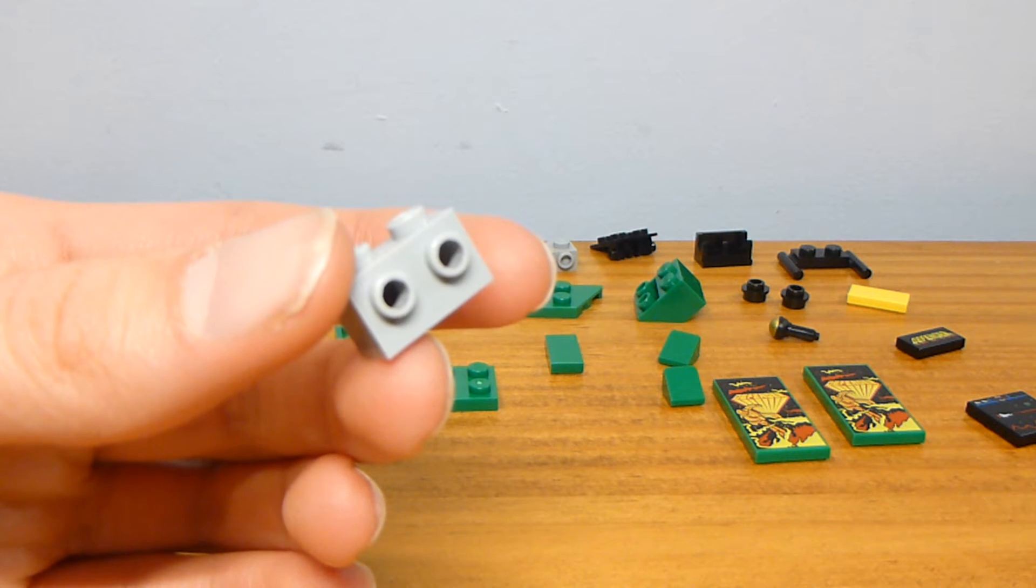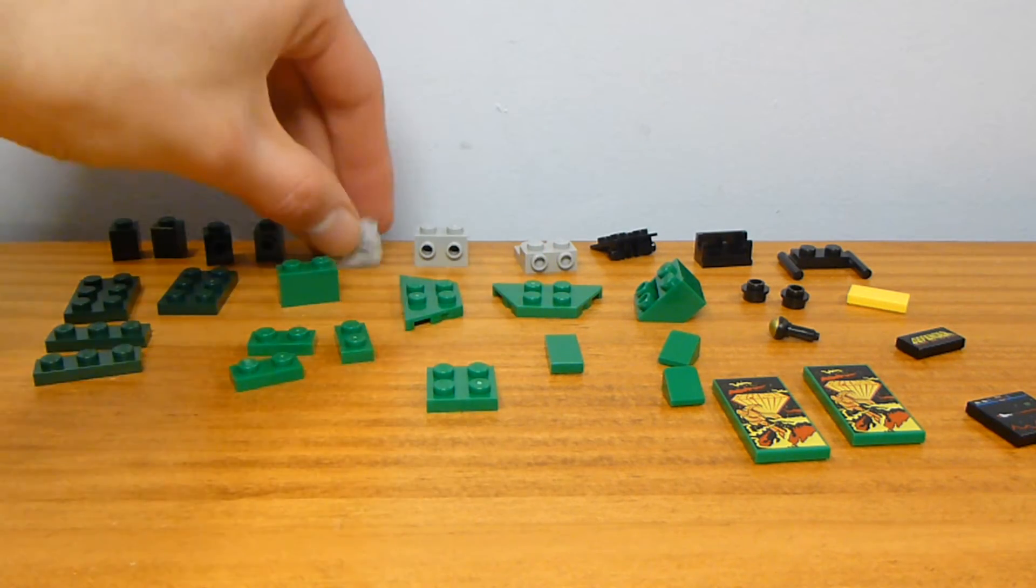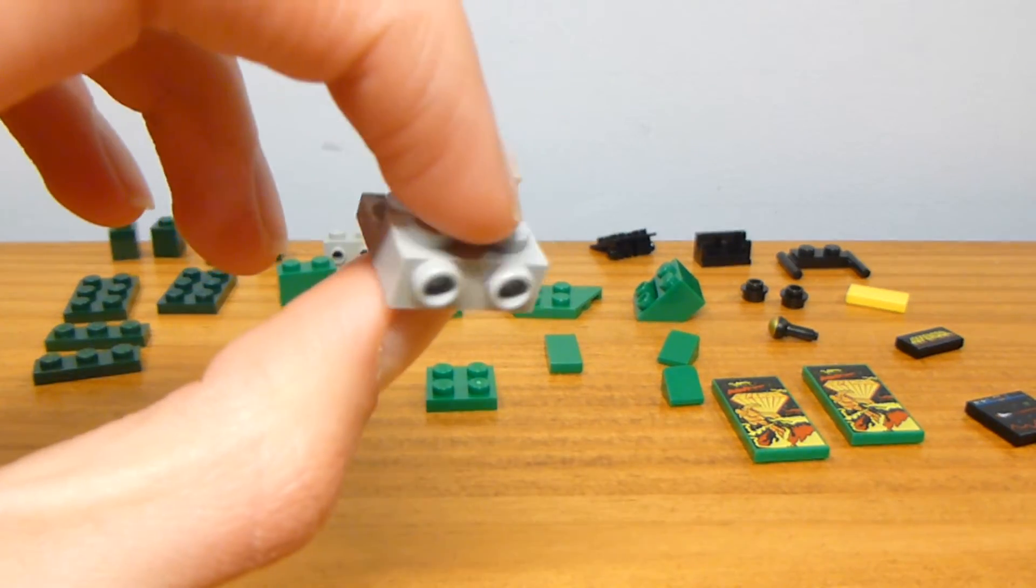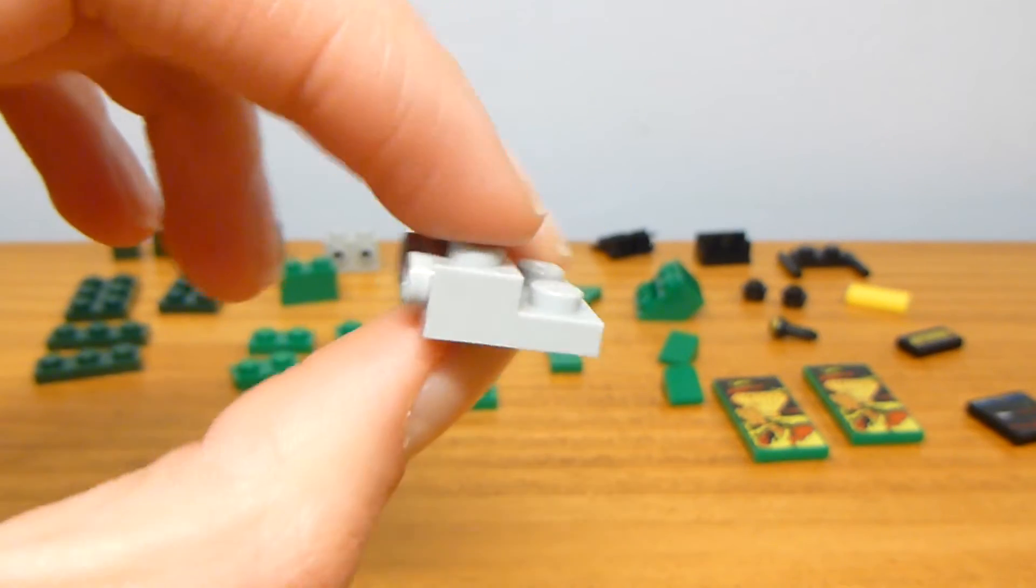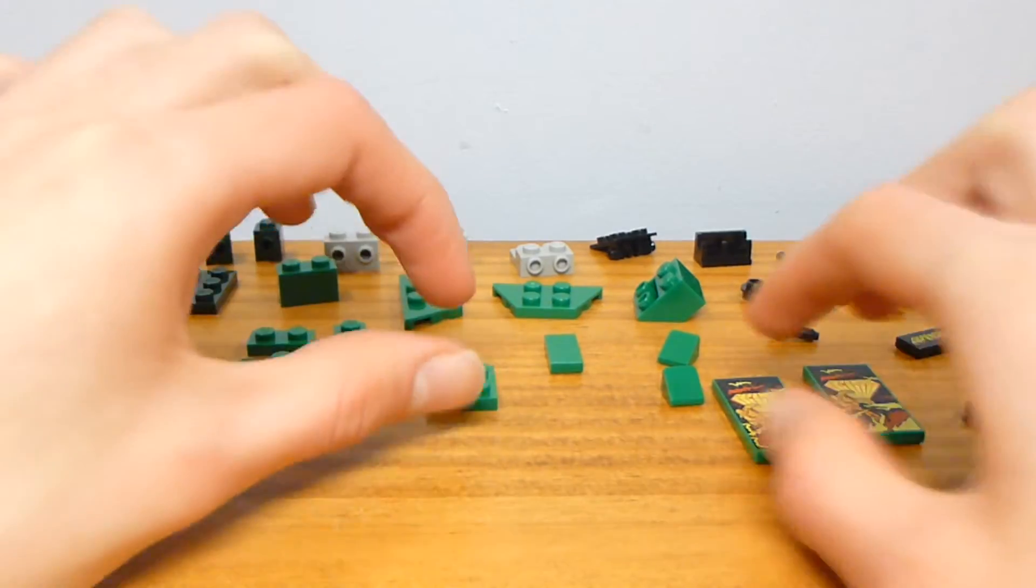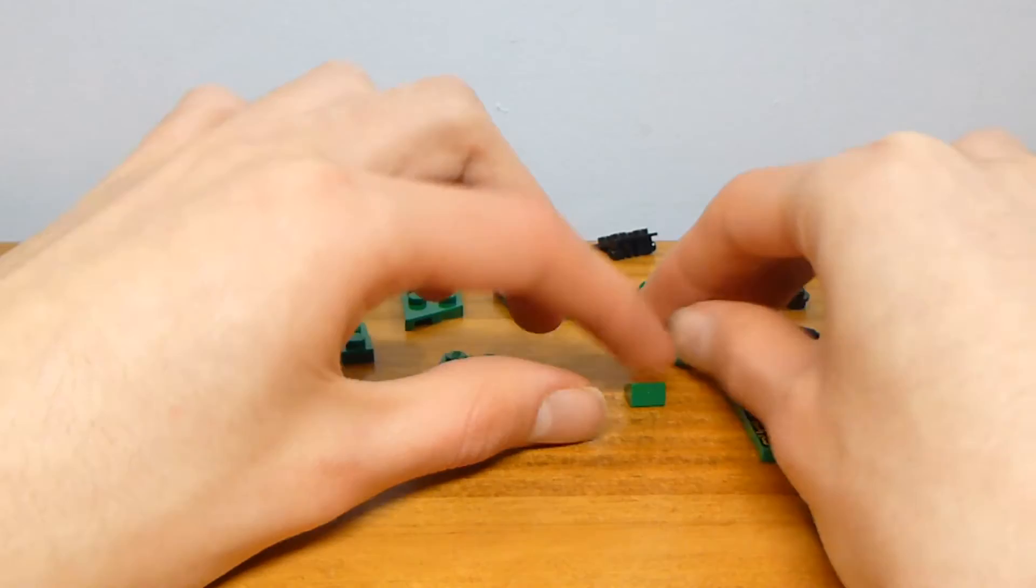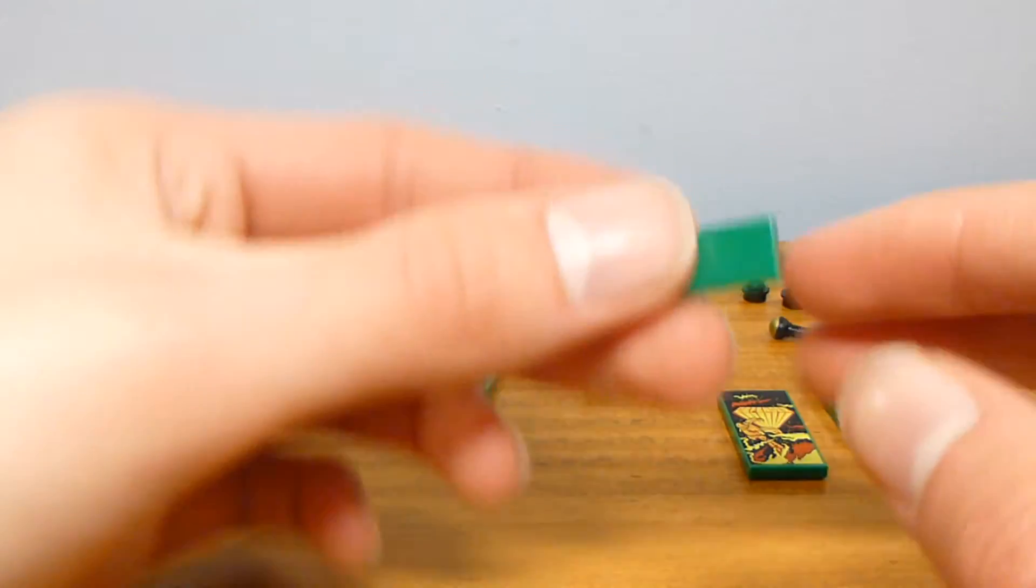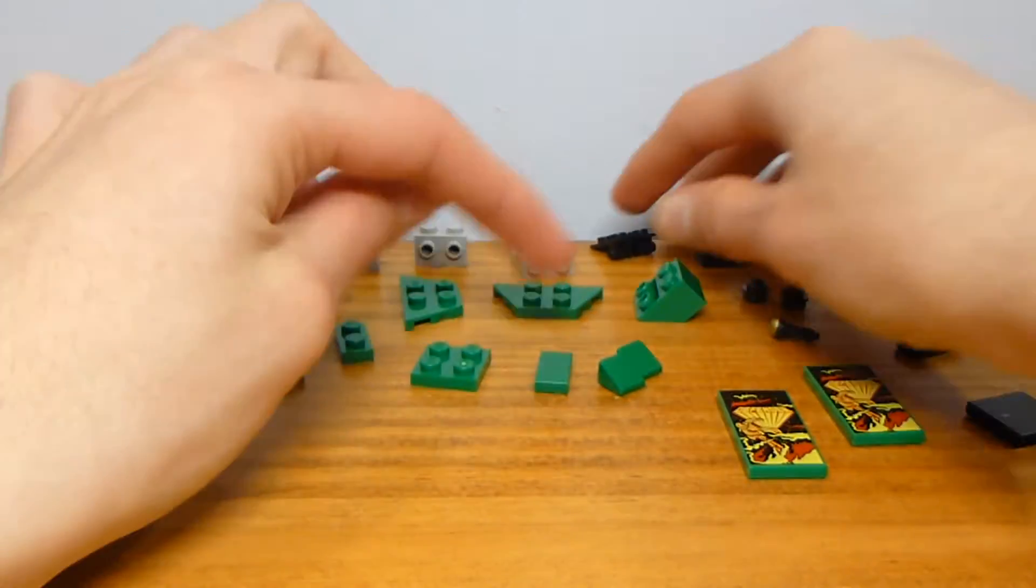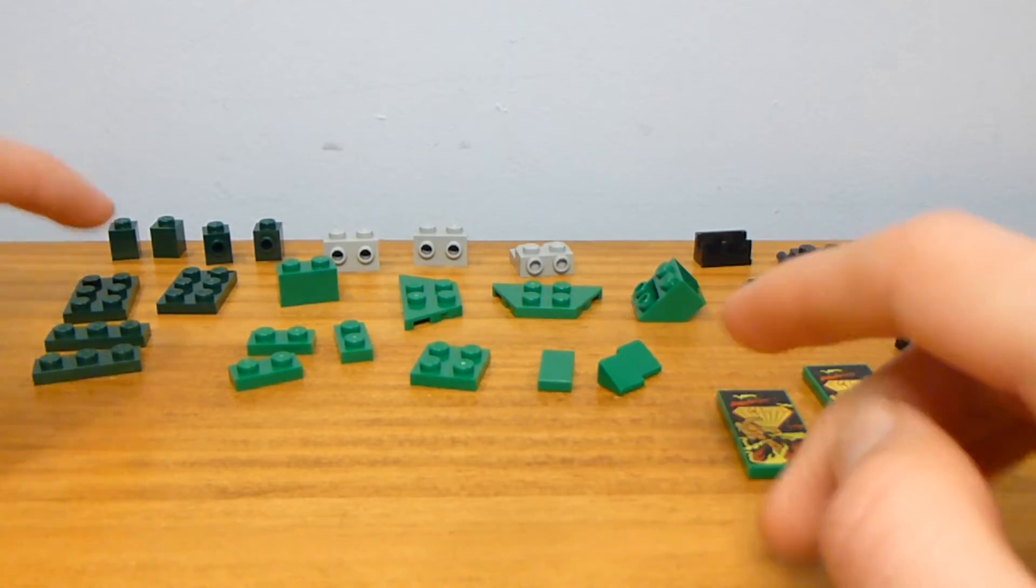We also have one of these 2x2 plates with the side studs - kind of a weird part but hard to describe. Two cheese slopes (you could combine these into a 1x2 cheese slope if you'd like) and a 1x2 tile. That one is for the green color in this case, or color B - consider this color A and this color B. They could also be the same if you'd like.